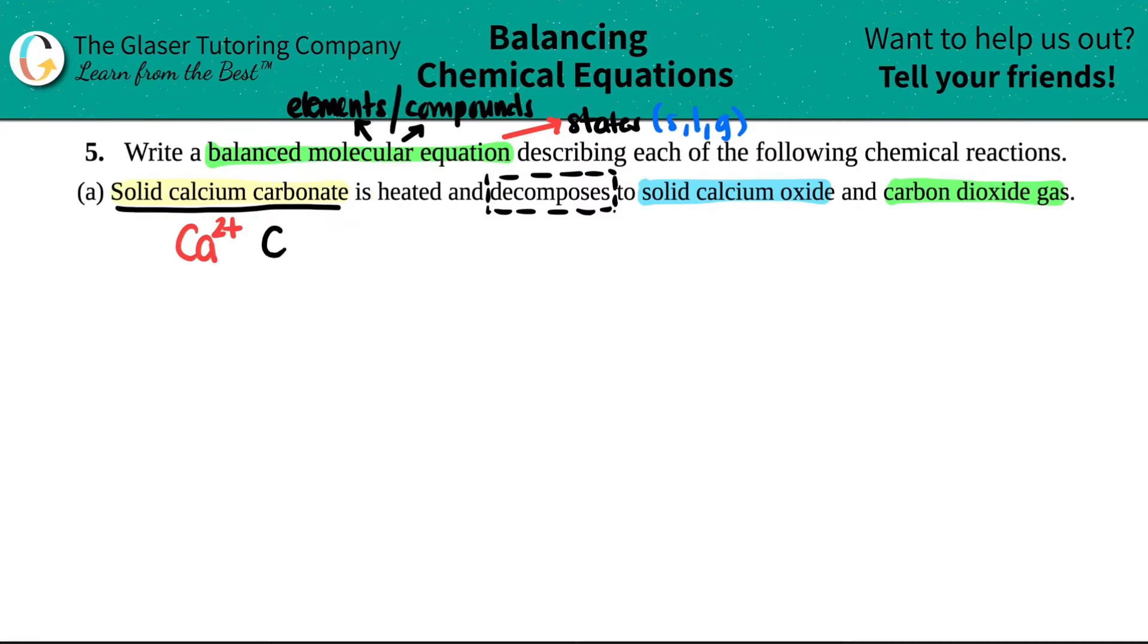Carbonate is CO3 with a two minus charge. Now, when you form this compound, remember you crisscross. So the two comes down here telling you that you need two carbonates and the two from the carbonate comes down telling you that you need two calciums. But since the numbers are the same, you have to get it into simplified form.